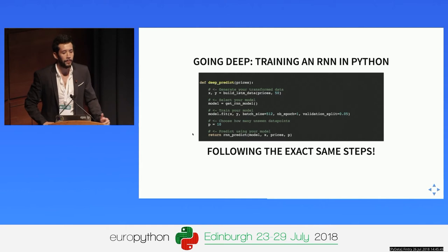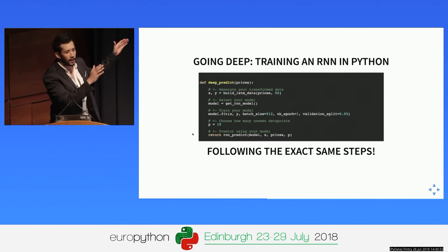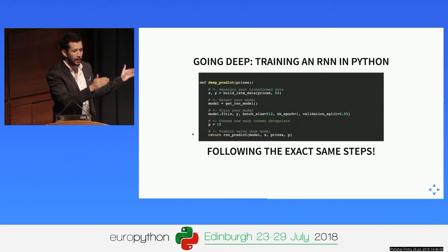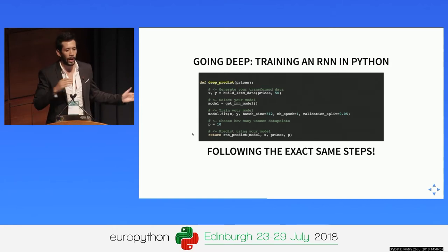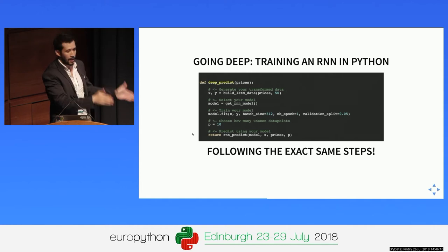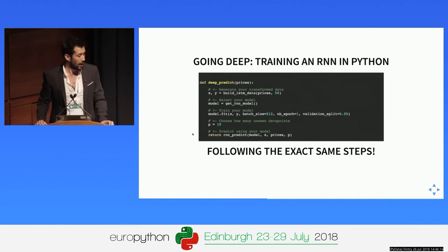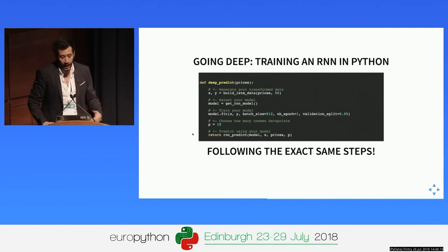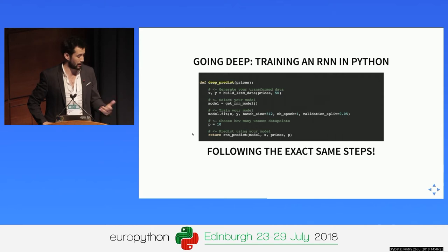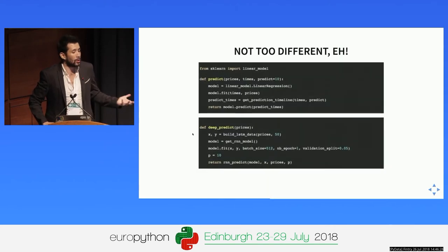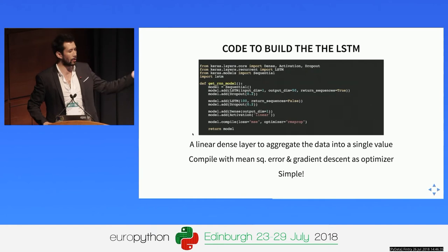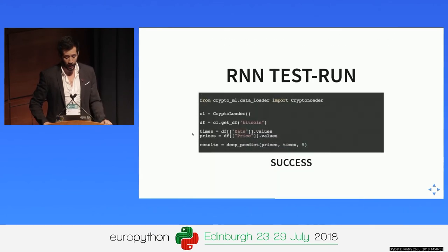In the case of the recurrent neural network, it's very similar. The snippet basically takes a sliding window and trains the recurrent network by feeding it 50 time series data points and then trying to predict the next one, moving in a sliding window. Whenever we want to run the prediction, we get the first prediction and use that next sliding window to get the next one, and so on. We follow the exact same steps: get the data, select the model, train the model, choose how many unseen data points you want, then predict. The code to build the LSTM is also in the codebase.